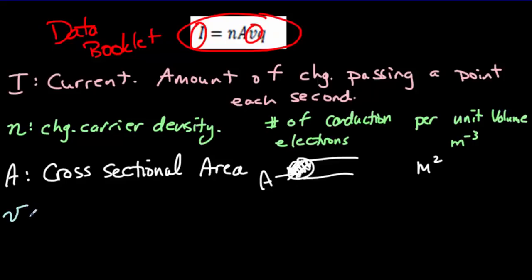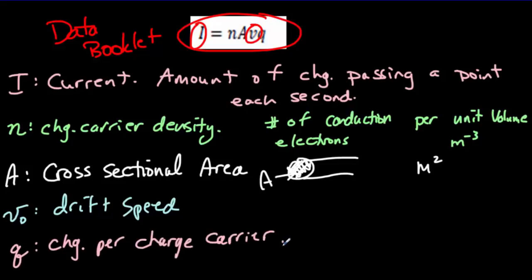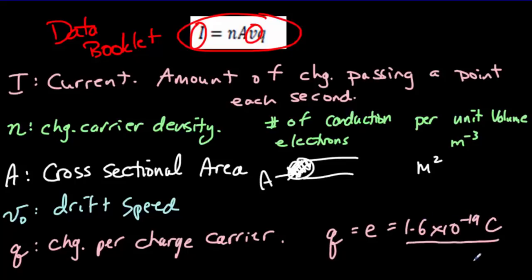Next is the drift speed or drift velocity — I like to use a subscript D to remind myself it's the drift velocity. Finally, Q is the charge per charge carrier. Since we're working exclusively with conducting wires, the charge carriers are electrons, so Q equals the charge of an electron: 1.6 times 10 to the negative 19 coulombs. In pretty much all problems we do, Q is going to be 1.6×10⁻¹⁹ coulombs.